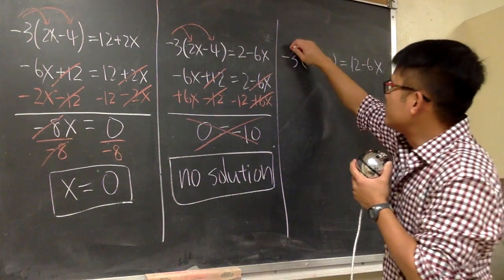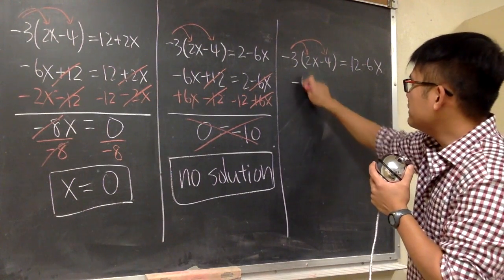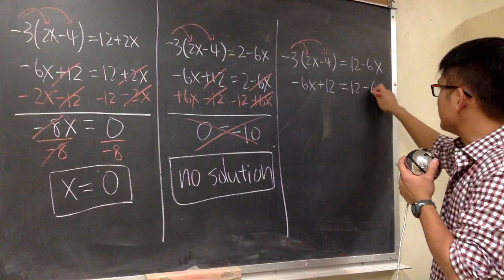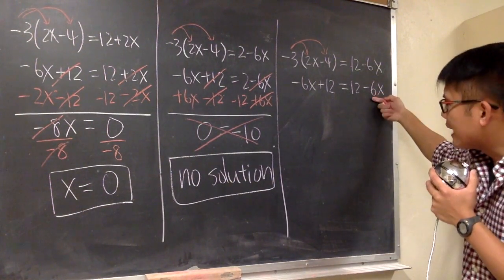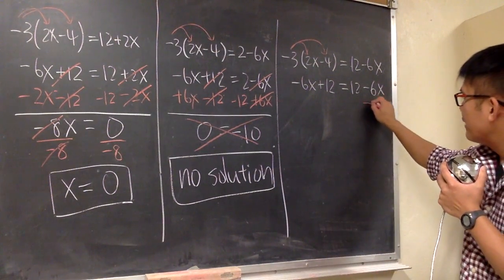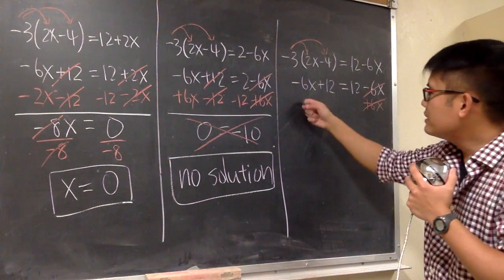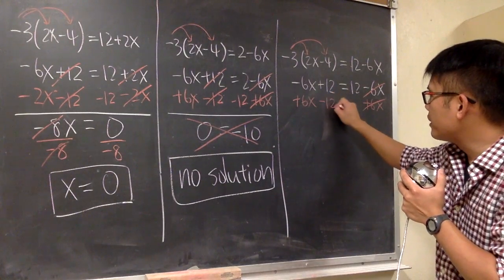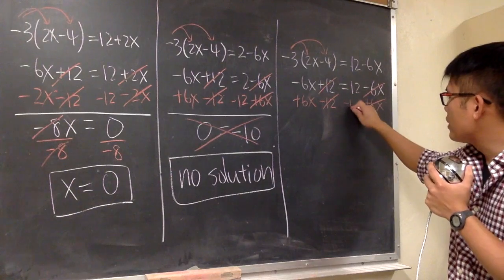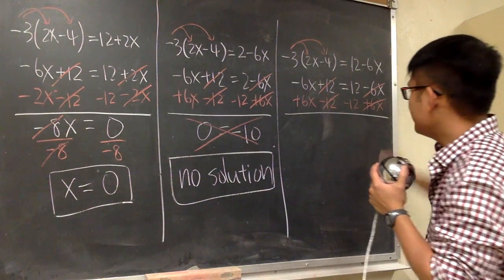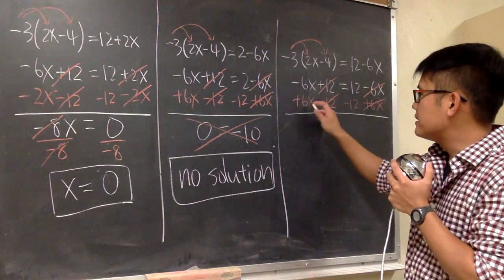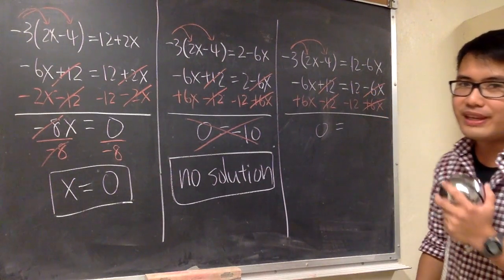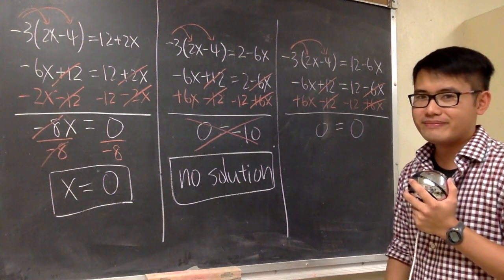Let's look at the third one. Distribute into the parentheses: we get negative 6x, and negative 3 times negative 4 is positive 12, so this equals 12 minus 6x. Now let's move all the x from the right to the left — add 6x here so that they cancel, and also add 6x on the left. I want to get rid of the positive 12 on the left, so subtract 12 here so they cancel, and minus 12 on the right. Here we have negative 6x plus 6x, that is 0. On the right-hand side we have 12 minus 12, which is also 0. We have 0 equals 0.